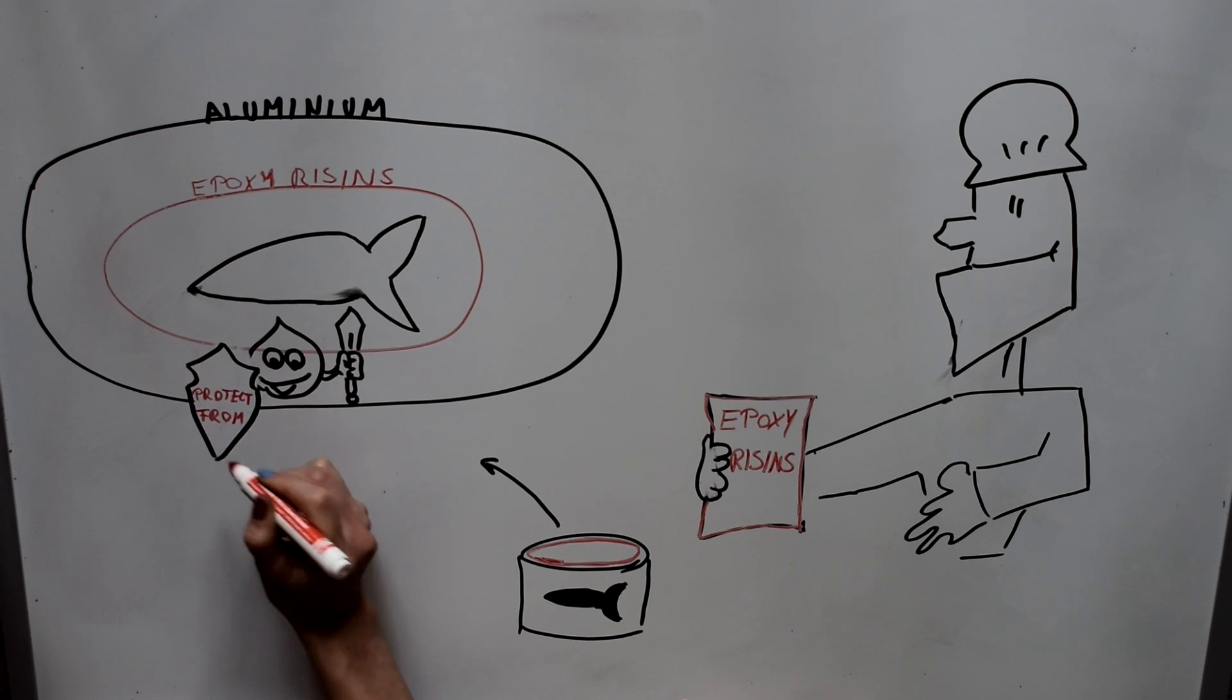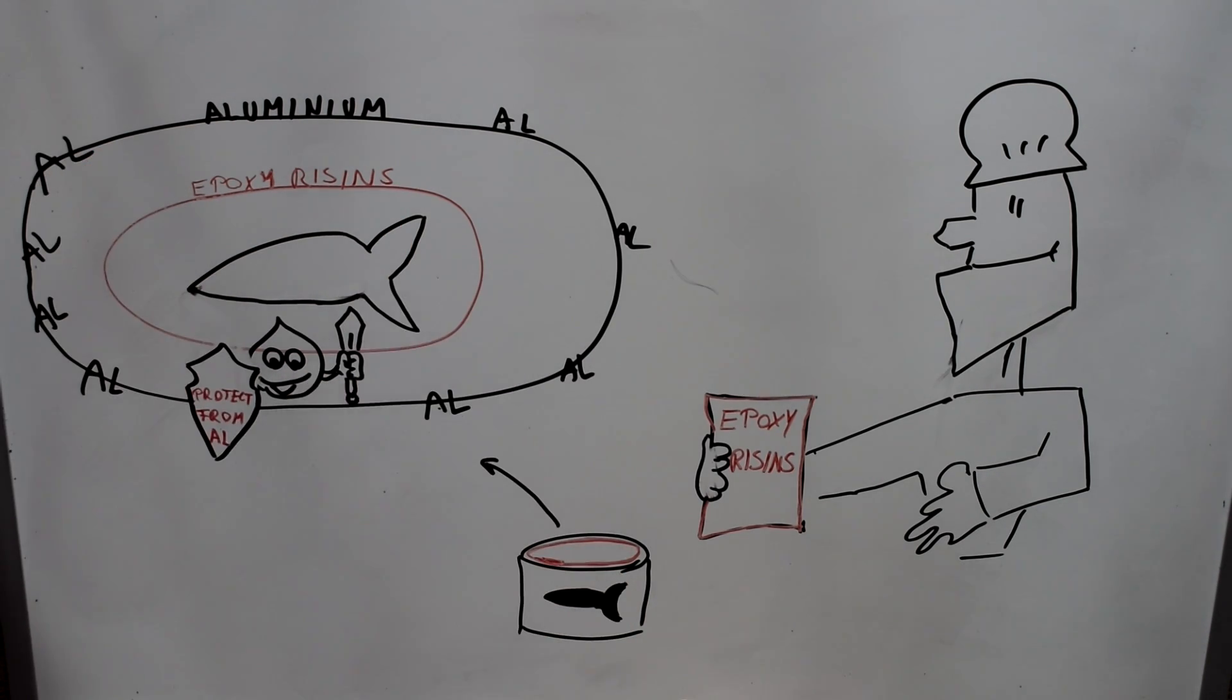The chemical which is used to create these epoxy resins are called bisphenol A, or in short BPA. A leakage of BPA into the food can also be toxic to humans just as aluminum leakage.